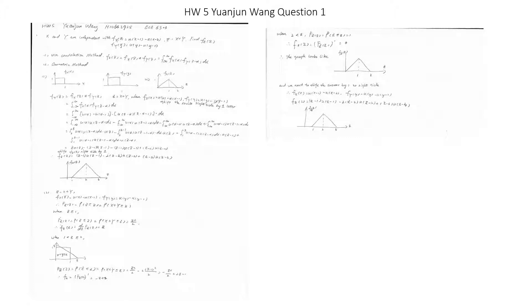fz(z) equals the integral from negative infinity to infinity of [u(alpha) - u(alpha-1)] times u(z - alpha) d alpha. This expands to the integral of u(alpha) times u(z - alpha) d alpha minus the integral of u(alpha) times u(z - 1 - alpha) d alpha.